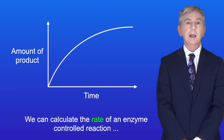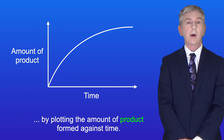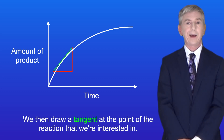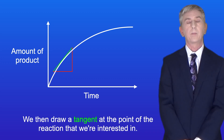We can calculate the rate of an enzyme controlled reaction by plotting the amount of product formed against time. We then draw a tangent at the point of the reaction that we're interested in.